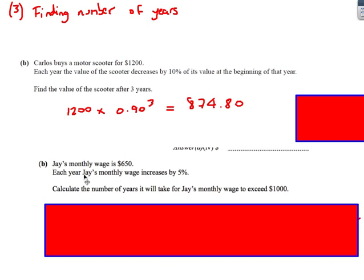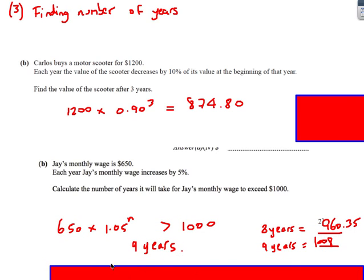Here's another question, though, where we actually have to work out the number of years until something happens. So Jay's monthly wage is $650. Each year it increases by 5%. How many years will it take to exceed $1,000? Okay. So basically set up an inequality if you want to show your method on this. We're starting with $650. Increase by 5%, 1.05 to the power n. I want this thing here to be greater than 1,000. Now, there is a method to do this using logs, but that's not on the syllabus, so you don't need to worry about this method.